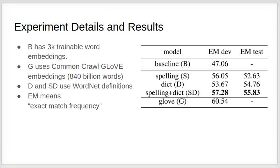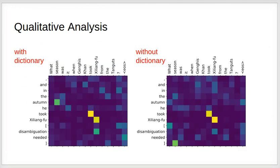We found that the improvement dictionary definitions bring adds up with the improvement from spelling. We also were able to see how having a dictionary definition, for example for the word autumn, allows the model to match this word with the word season. Without the dictionary, a similar model cannot do it.